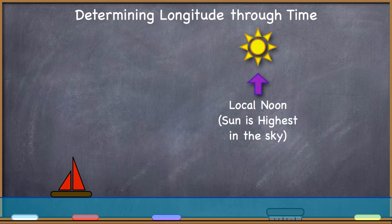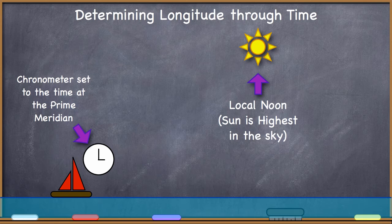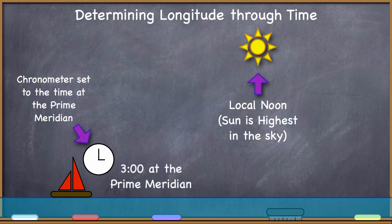But then he takes a look at the chronometer which is set to the time at the prime meridian, that reference time. And let's say for the sake of example, he sees that the timepiece shows three o'clock, three o'clock in the afternoon, three o'clock PM. So he knows that it's three o'clock PM at the prime meridian.